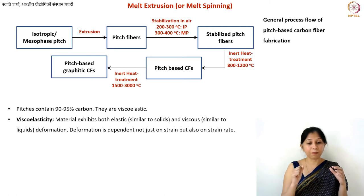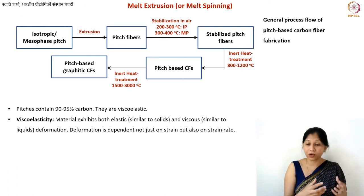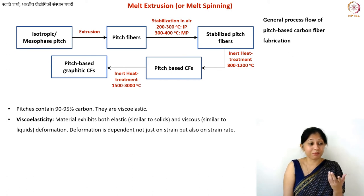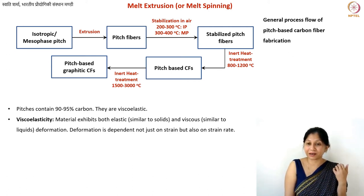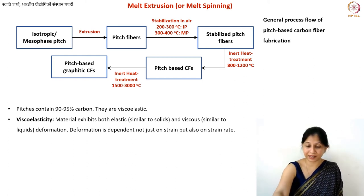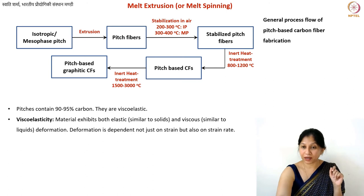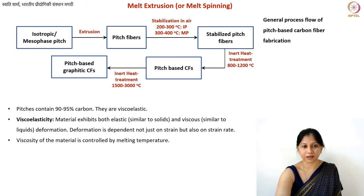Viscoelasticity is very important for pulling fibers. If a material is purely liquid with only viscosity and no elasticity — like water — it is very difficult to pull fibers from it. But if it is a purely solid crystalline material, that is also impossible. So we need both properties. You can also control viscoelasticity by controlling the length of chains or the amount of solvent in a polymer solution to tune it for fiber manufacturing.